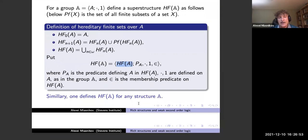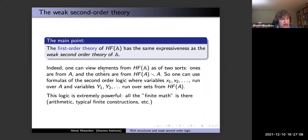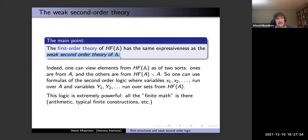You can do this for arbitrary structures, not only groups. The main point of how people look at weak second-order logic: the first-order logic of this bigger structure HF(A) has the same expressiveness as the 'big' weak second-order logic over A. So whatever property you can express in HF(A) about elements of A is, by definition, a weak second-order logic property.